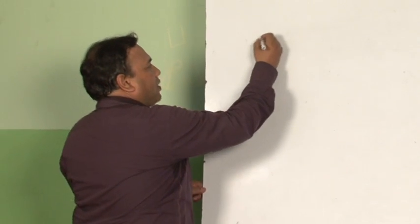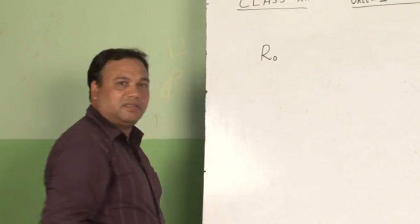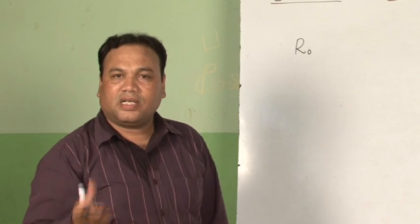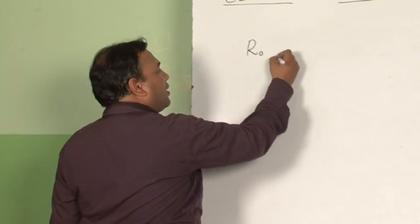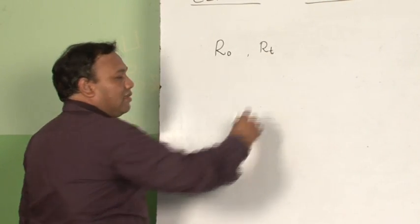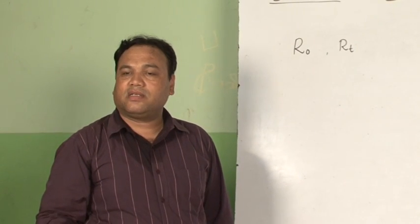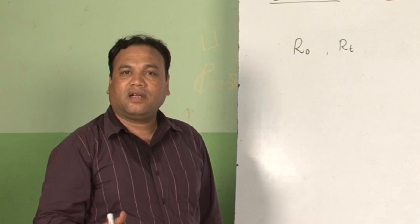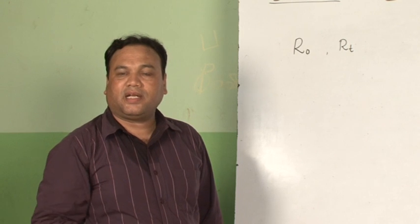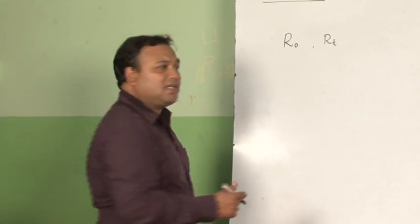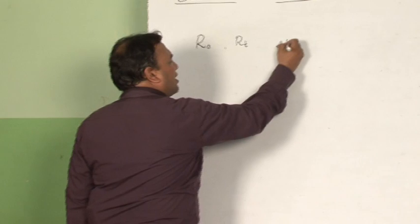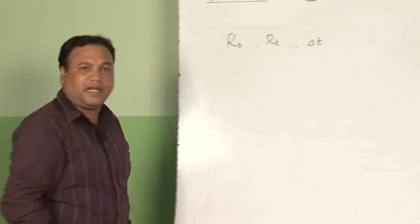Suppose R naught represents the resistance of the conductor at 0 degree Celsius. When its temperature is increased, resistance changes to R T — the resistance of the conductor at temperature T. The change in temperature is written as delta T.